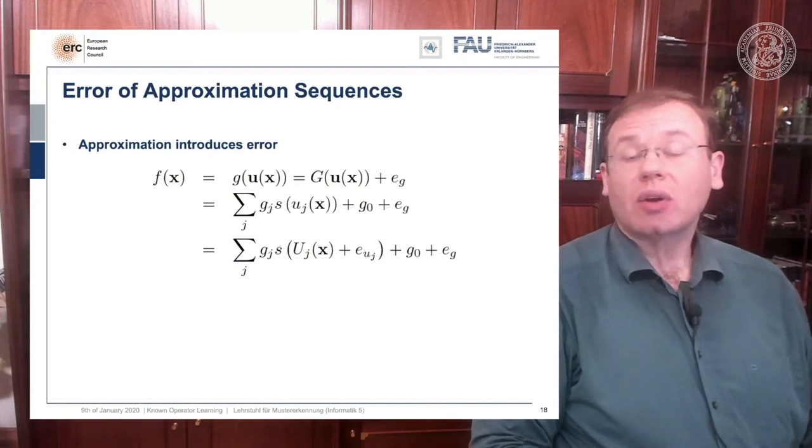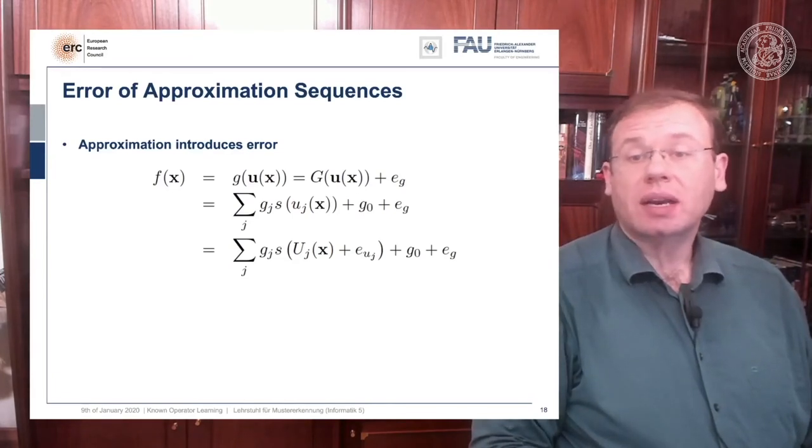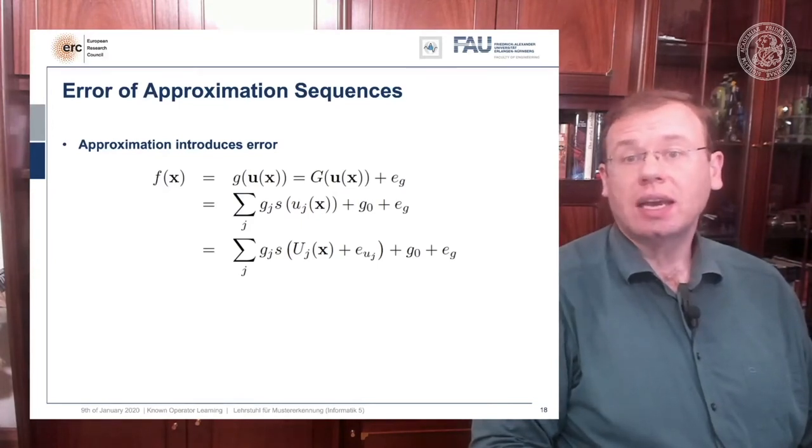So we can also now approximate U component wise, and then we introduce an approximation and then the approximation of course also introduces an error. So this is nice, but we kind of get stuck here because the error of the approximation of U is inside of the sigmoid function and all the other errors are outside. So what can we do about this?